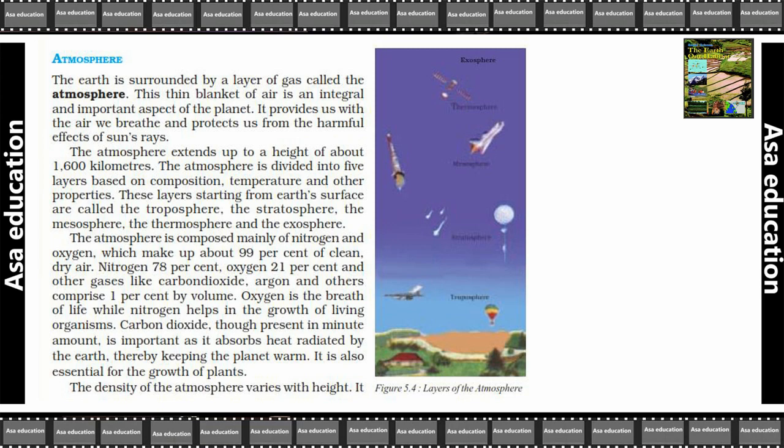These layers starting from the earth surface are: troposphere, stratosphere, mesosphere, thermosphere, and finally exosphere. Ab earth ke surface se agar hum start karein, toh sabse pehle aati hai troposphere, phir stratosphere, phir mesosphere, thermosphere aur finally aati hai exosphere. The atmosphere is composed mainly of nitrogen and oxygen, which make up about 99% of clean dry air.